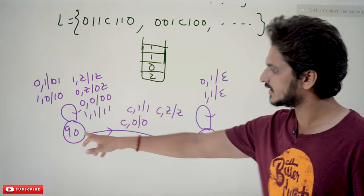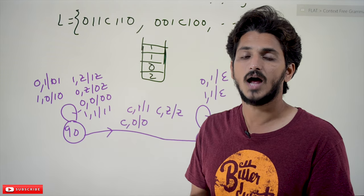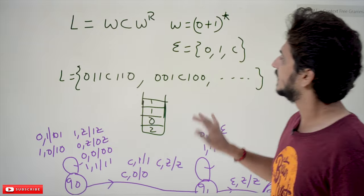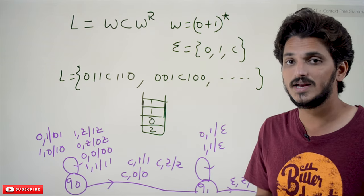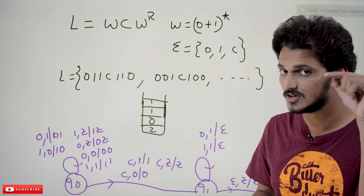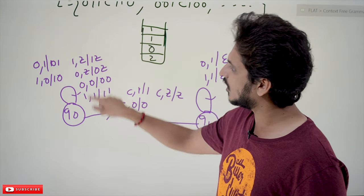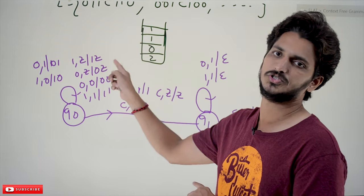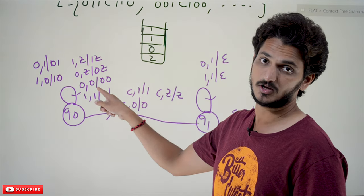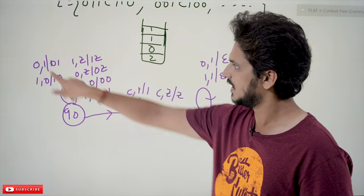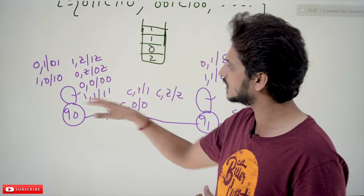So how do we write this? We start from q0. On q0, whatever you find, push onto the stack. One important point: the language also accepts a single 'c', because w = (0+1)* can be epsilon on both sides. On q0: if input is '1' and stack top is Z, push '1Z'; if input is '0' and stack top is Z, push '0Z'; if input is '0' and stack top is '0', push; if input is '1' and stack top is '1', push; if input is '0' and stack top is '1', push; if input is '1' and stack top is '0', push — all possibilities are written.